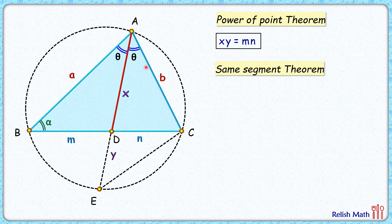Now if you look at this yellow triangle and this pink triangle, both triangles have theta and alpha as two of their angles.